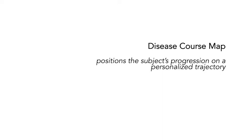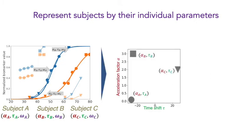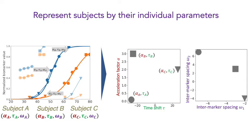Once we've built the disease course map at the group average level, let's see how we can personalize this map to any individual data to position the subject's progression on a personalized trajectory. We were able to position individual data back on the group average timeline of disease progression thanks to three parameters: the acceleration factor alpha, the timeshift tau, and the inter-marker spacing omega. We can look at the distribution of those parameters within a given population — here is an example of the distribution of the acceleration factor and the timeshift, where each dot represents one individual, and we can do the same representation for the inter-marker spacing.